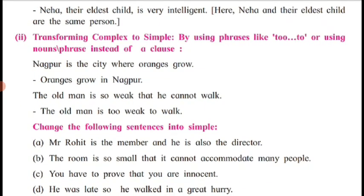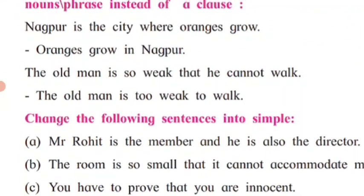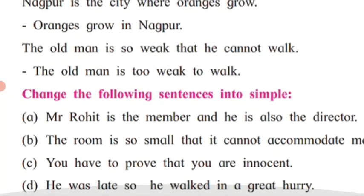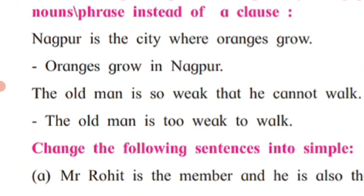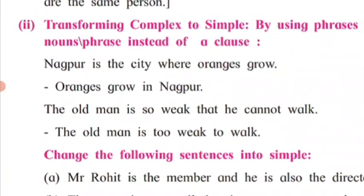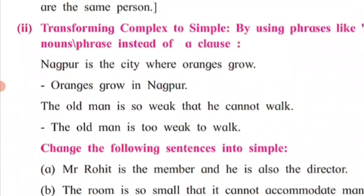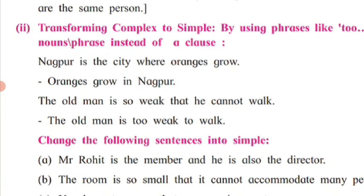Next is transforming complex sentences to simple ones. Converting compound and complex sentences into simple ones is also a way to shorten the length of your original sentence. For example, 'Nagpur is the city where oranges grow' is a complex sentence using 'where' as a conjunction. You can simplify it and write: 'Oranges grow in Nagpur' — which serves the same meaning.